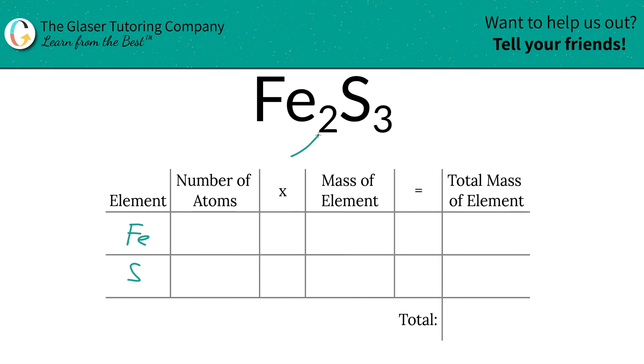Next is to write down the number of atoms. That's where the subscripts come into play. So we have two irons and we have three sulfurs.